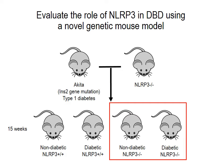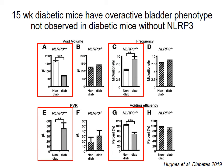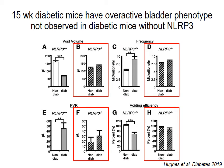It's important that we assess these mice at the 15-week time point. At 15 weeks, these diabetic mice display an overactive bladder phenotype. Interestingly, this phenotype doesn't develop in diabetic mice lacking the NLRP3 gene.